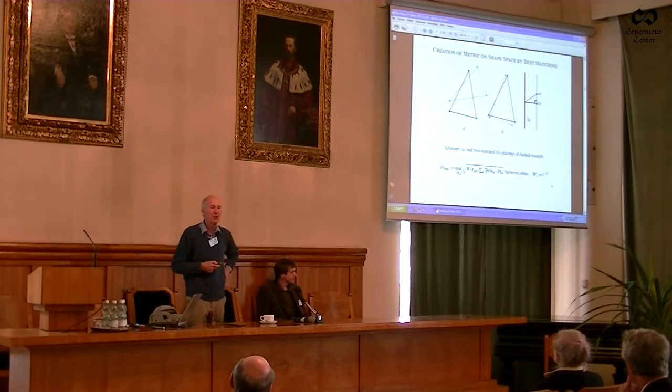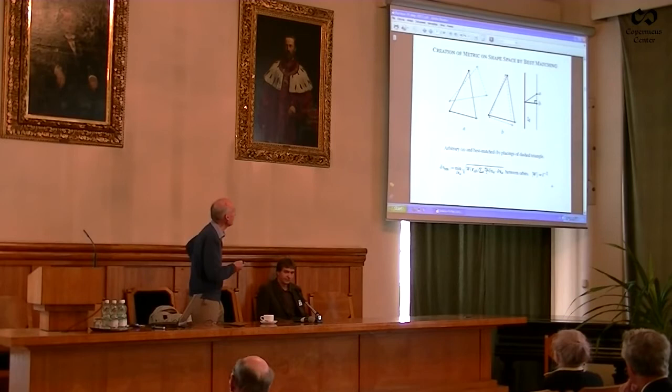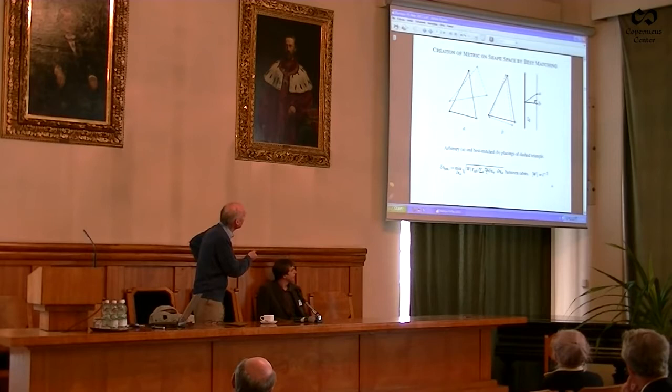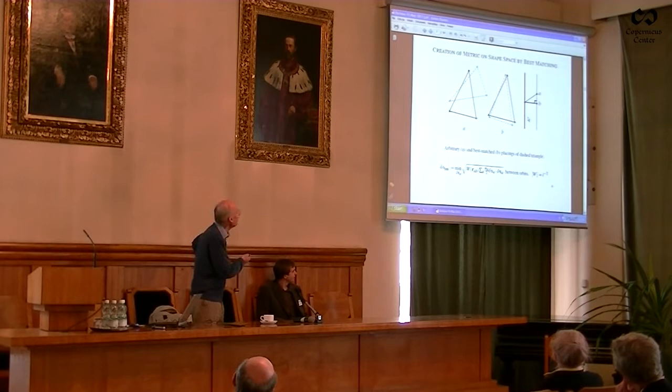So I multiply it by something which is a function on shape space with dimensions of length to the minus two—so the whole thing has no overall length dimension; it's dimensionless. The masses I can always take out and divide by a suitable part of the total mass to make the whole thing dimensionless. And then there's a square root because I want a geodesic principle. The way to get rid of time once and for all is to put a square root into your action. Then I move the triangles around—I'm seeking the minimum of this quantity. It's positive definite, and there is a unique minimum.